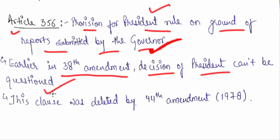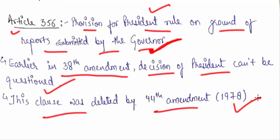The 38th Amendment provision that excluded President's Rule from judicial review came in around 1975. Later, with the 44th Amendment in 1978, that provision was deleted. So President's Rule was first brought outside judicial review under the 38th Amendment, and then that exclusion was removed by the 44th Amendment.